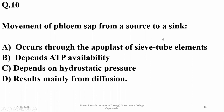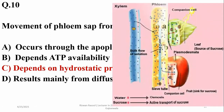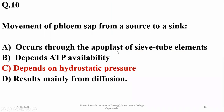Question ten: movement of phloem sap from source to sink is dependent upon hydrostatic pressure — high hydrostatic pressure at the source pushes the solution in bulk toward the sink. It does not occur through apoplast of sieve tube elements only, is not dependent on ATP availability since it's a passive transport pathway, and bulk flow — not diffusion — is the mechanism.